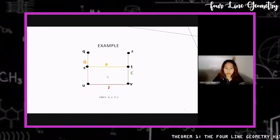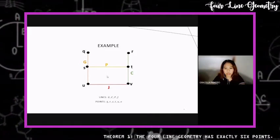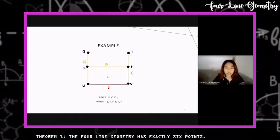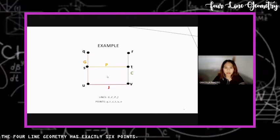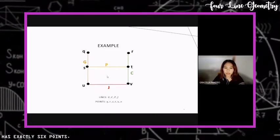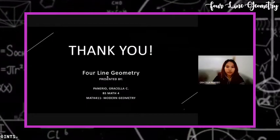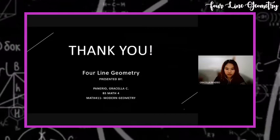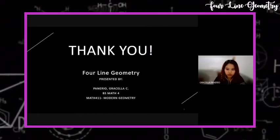We again have lines G, C, P, and J, and points Q, R, S, T, U, and V. By theorem one of the four-line geometry, which states that a four-line geometry has exactly six points, that's all. Thank you, and have a good day.